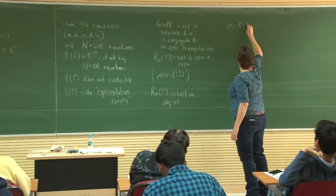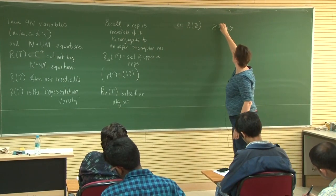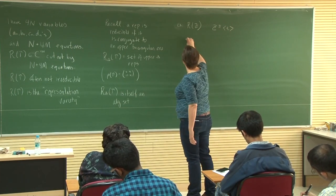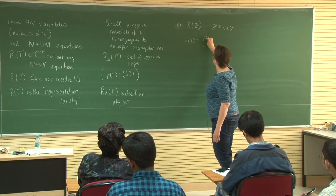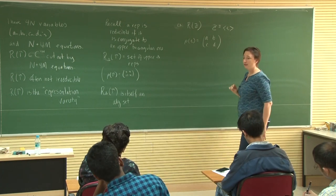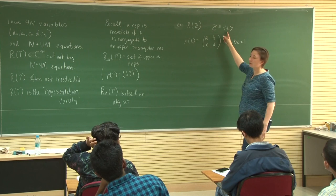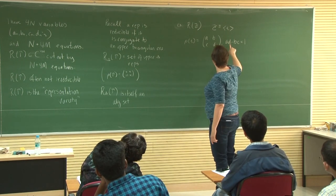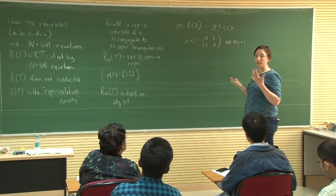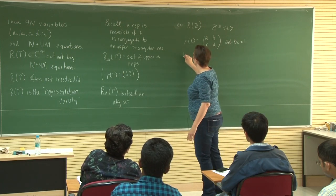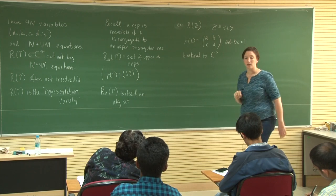Let's take a look at Z, the cyclic group generated by T. What do I need to do? I just need to figure out where rho of T goes — it's completely determined by that. It goes to some matrix A, B, C, D where AD minus BC equals 1, and there are no other constraints because this is a free group on one generator. If I solve for A, for most representations A won't be 0 and I can have three free variables. So this is birationally equivalent to ℂ³ itself.